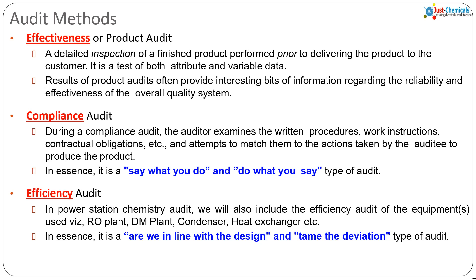It is important to note that effectiveness relates to the external environment or the customer — for example, DM water quality is the effect delivered to the customer. Efficiency is internal, assessing performance and opportunities for improvement. For example, if the output between regenerations of your ion exchanger is not up to the mark or not matching with the inlet water quality, that is a subject for an efficiency audit.